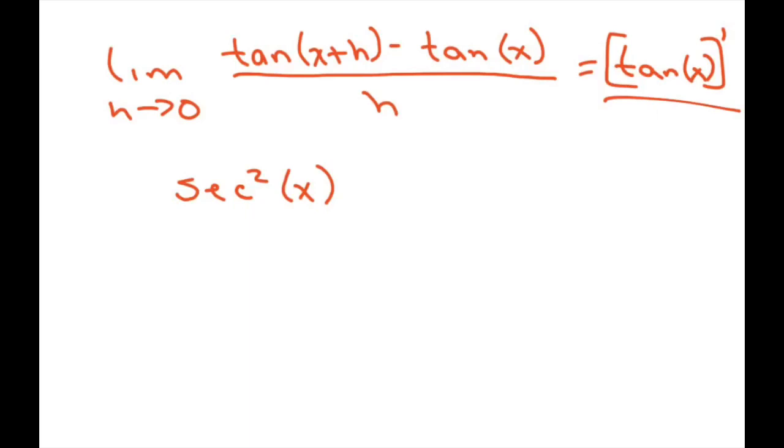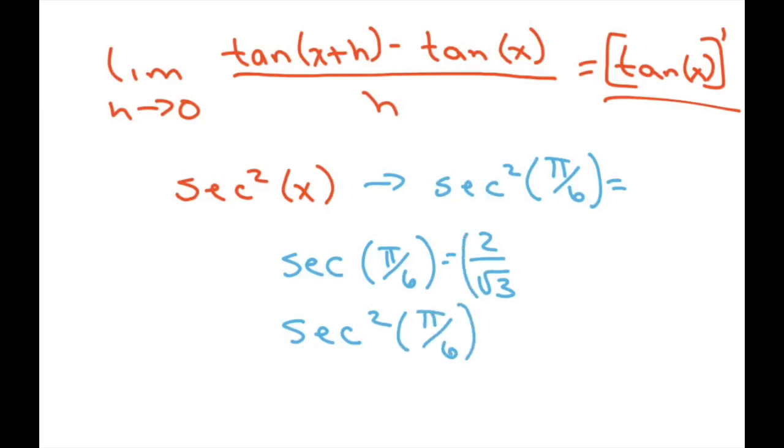However, our x happens to be π over 6 because that's what they gave us. So basically substituting you get secant squared of π over 6, and that's going to equal, let's just do secant of π over 6 and that equals 2 over square root of 3. And if you square it, so secant squared of π over 6, that just means we're going to square this. That just equals 4 divided by 3.